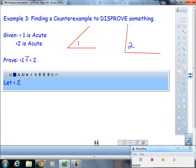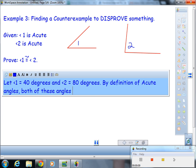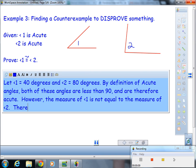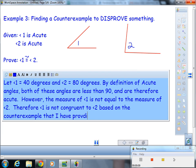So let angle 1 equal 40 degrees and angle 2 equal 80 degrees. By definition of acute angles, both of these angles are less than 90 and are therefore acute. However, the measure of angle 1 is not equal to the measure of angle 2. Therefore, angle 1 is not congruent to angle 2 based on the counter example that I have provided.